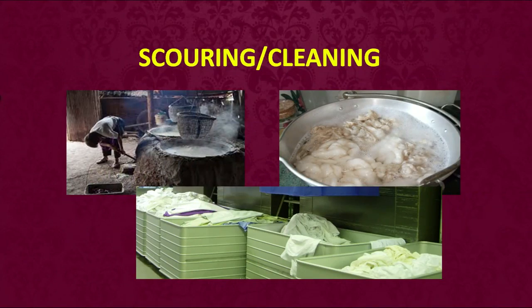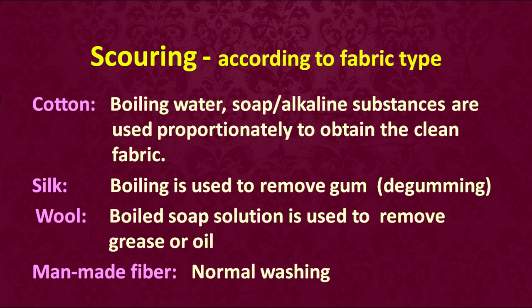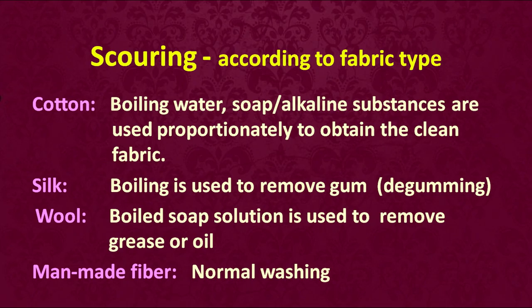Here you can see how scarring or cleaning is done to yarns and fabrics. When we talk of scarring according to fabric types: for cotton, we use boiling water, soap or alkaline substances in a certain proportion to obtain clean fabric. For silk, it is boiled to remove the gum — the process is called degumming. For wool, boiled soap solution is used to remove the grease or oil. For man-made fibers, we use normal washing.